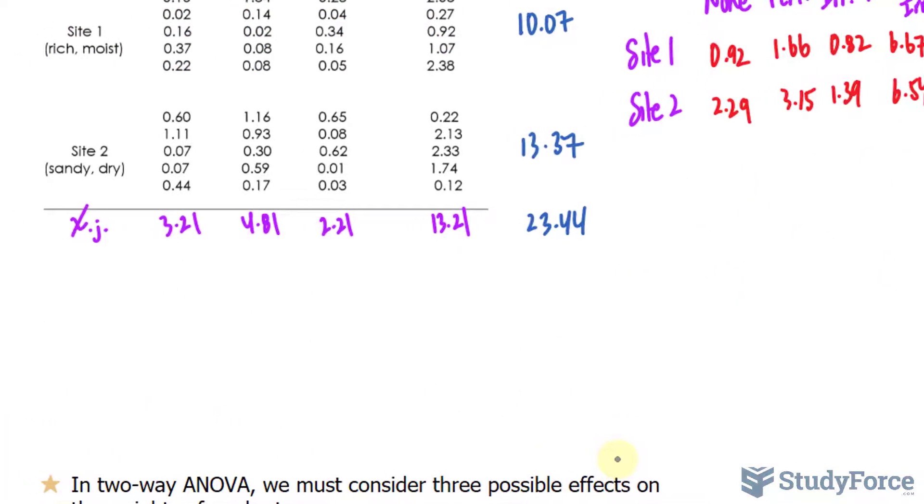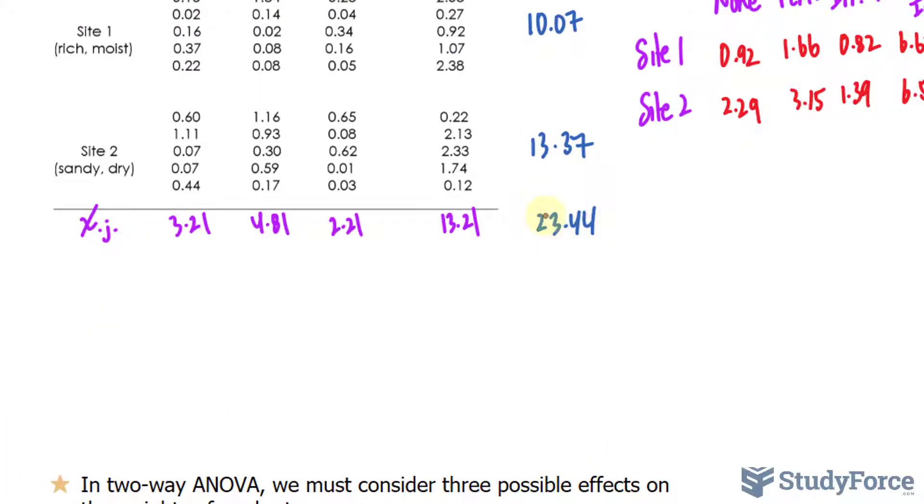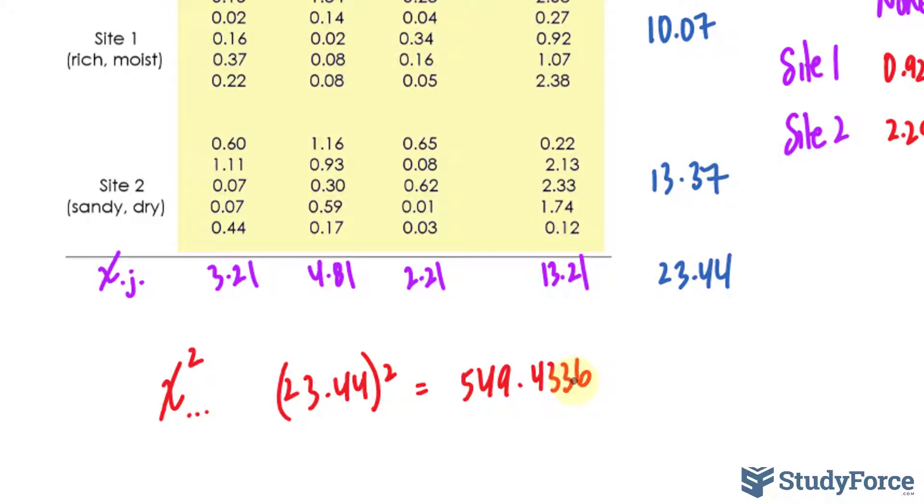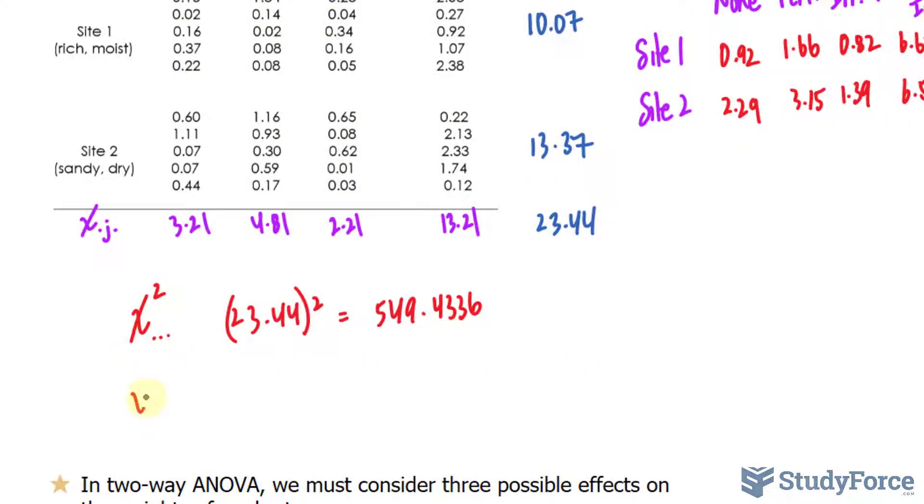We're still not ready to fill in that ANOVA table. Next what I'll do is take the square of this value that will be important for us later on. That's written as x subscript dot dot dot raised to the power of 2. 23.44 raised to the power of 2 gives us approximately 549.4336. We also need to square each of these individual values and sum them up.